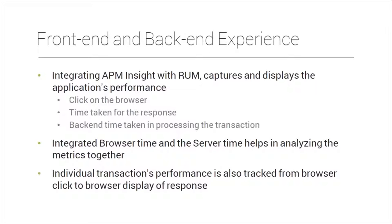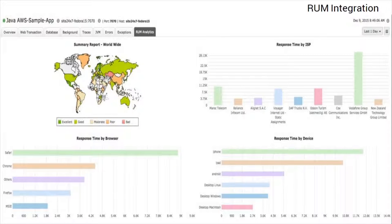The integration with real user monitoring allows monitoring from the real user's perspective combined with back-end experience data. Integrating APM Insight with RUM captures and displays the application's performance — the browser click time, time taken for the response, and back-end time in processing the transaction — all in one view. Integrated browser time and server time help you analyze metrics together, and you can check individual transaction performance from both browser and application levels.